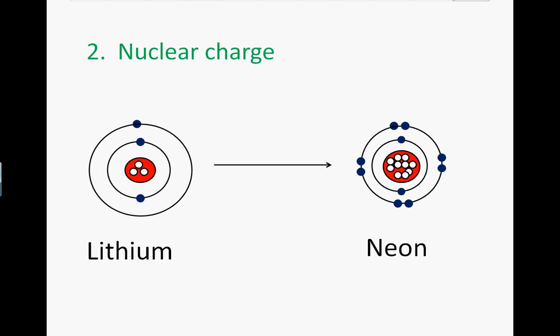Nuclear charge is a measure of how many protons there are on a nucleus. The greater the number of protons, the greater the nuclear charge. If we compare lithium at one end of period two in the periodic table with neon at the other end, we see that neon with ten protons has a greater nuclear charge than lithium with only three protons.